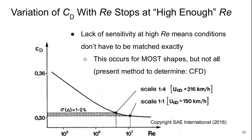So, this lack of sensitivity means that we don't have to match the non-dimensional conditions exactly. Now, this occurs for most shapes, but not all. Sometimes the sensitivity can be greater than you might expect. So, presently the way we would determine this is using computational fluid dynamics to simulate the flow at different Reynolds numbers. And from there, even though the drag coefficient is predicted, we typically don't expect to be exactly right, but we would be able to see if there's a sensitivity to Reynolds number. And that would allow us to determine what we can get away with in terms of a wind tunnel test.